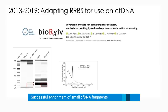You can see that our method, shown in black — circulating-free ROBS — is indeed highly enriching for properly MSP1-digested circulating-free DNA fragments. While in the classic ROBS method, shown in gray, most of the sequencing reads are not coinciding with the in silico-predicted MSP1-MSP1 fragments.